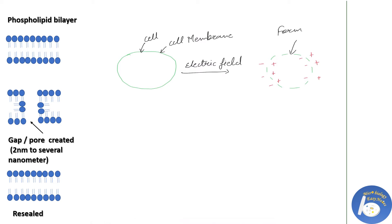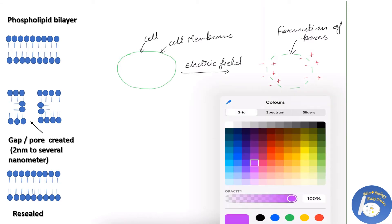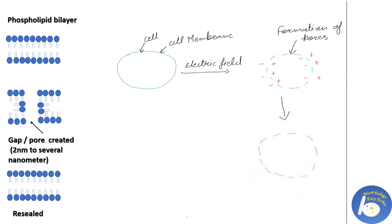Once the gap is created, we can easily insert nucleic acid, drugs, or any other chemical inside the cell, because the channels or pores are formed so they can easily pass through the pores.